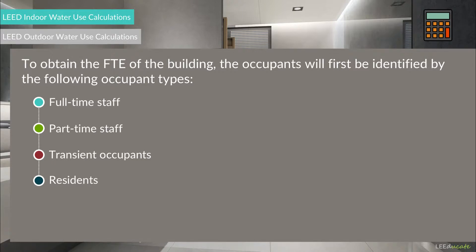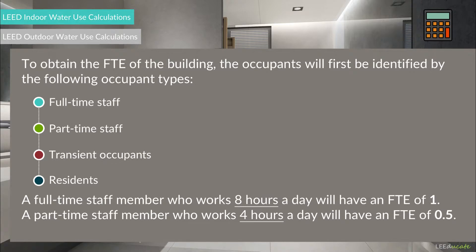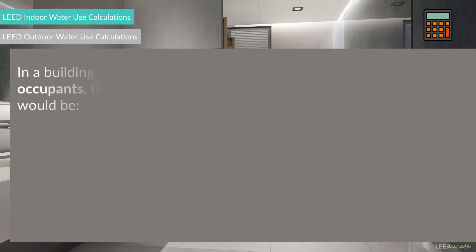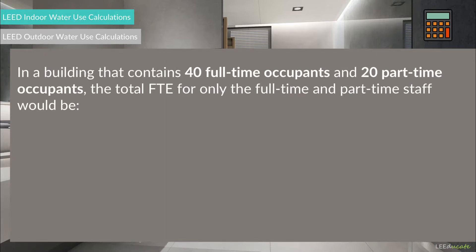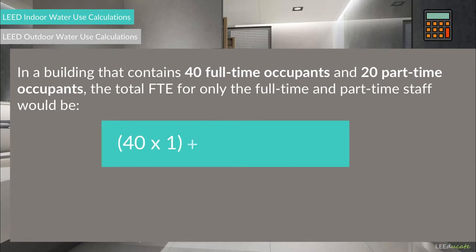Transient occupants represent building users who do not use the facility consistently, such as visitors, customers, or students. The number of FTE occupants is based on a standard 8-hour occupancy period. A full-time staff member working 8 hours a day will have an FTE of 1, while a part-time staff member working 4 hours a day will have an FTE of 0.5. In a building with 40 full-time occupants and 20 part-time occupants, the total FTE for full-time and part-time staff would be 40 times 1 plus 20 times 0.5, which equals 50.